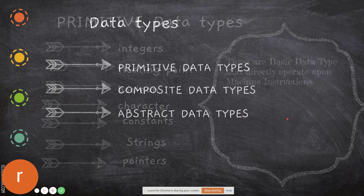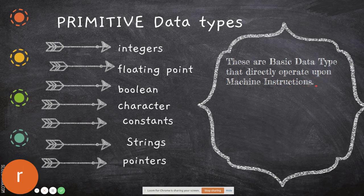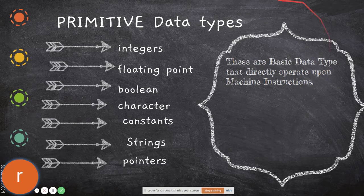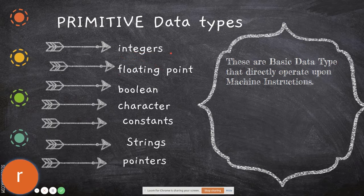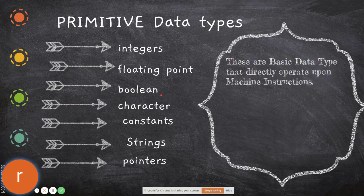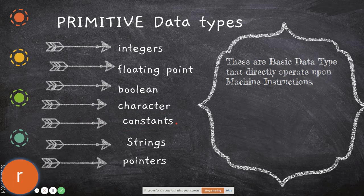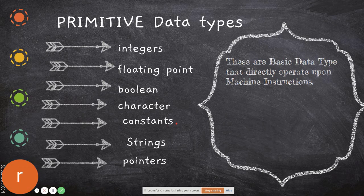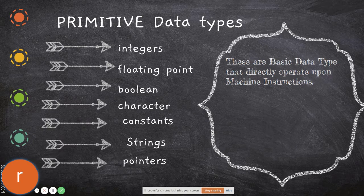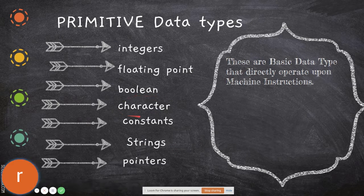Primitive data types are basic data types that directly operate upon machine instructions. They can be directly stored in memory locations as individual atoms. Some primitive data types include integers, which are whole numbers without decimal points; floating point, which are numbers with decimal points; boolean, either zero or true or false; character, a single character; constants, whose values remain the same once declared throughout the program; strings, pointers.